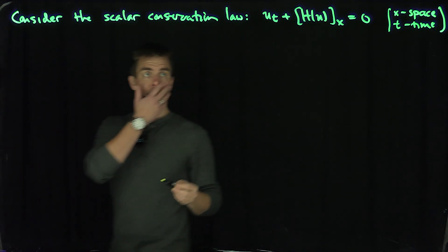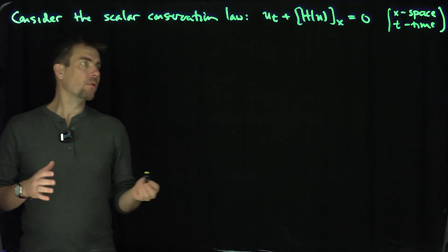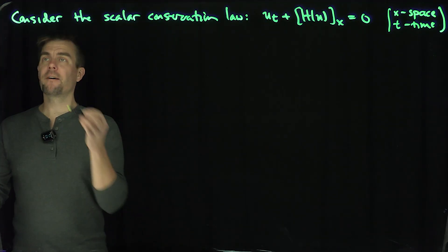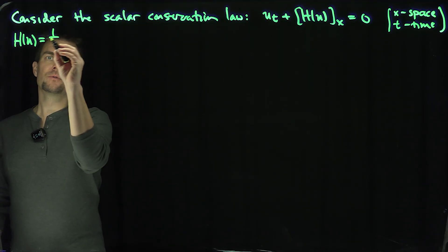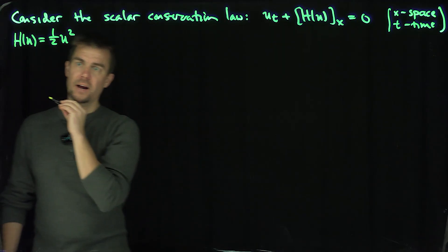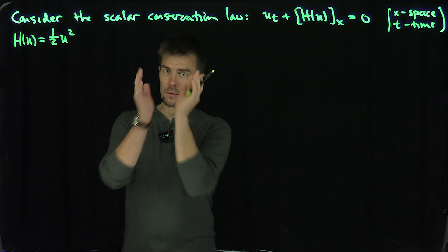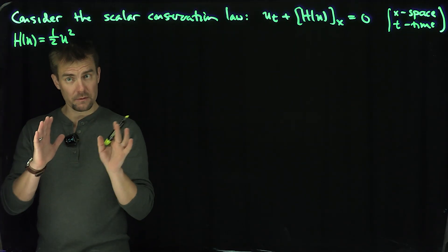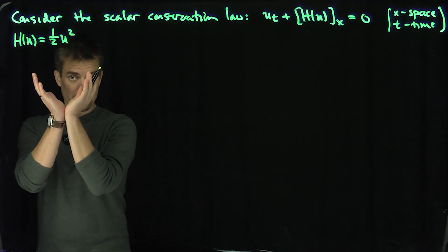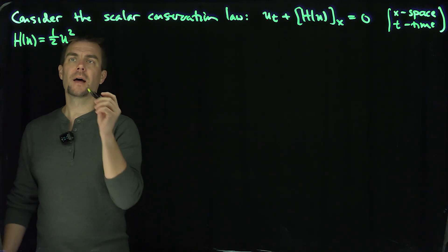Okay, excellent. And so now, of course, we want to look at particular instances of this. So one very famous example, which we've studied in previous videos, is if h(u) is one half u squared. That's a smooth convex function. Convexity and concavity are going to be important in later videos.